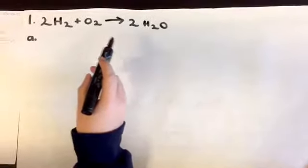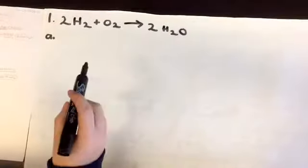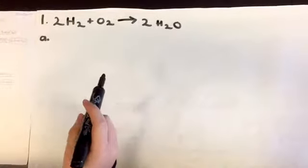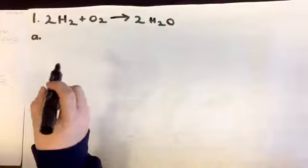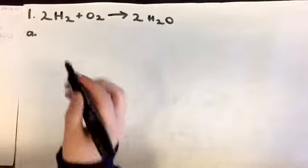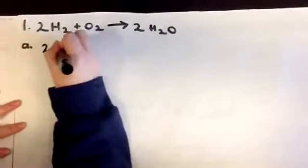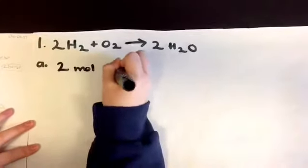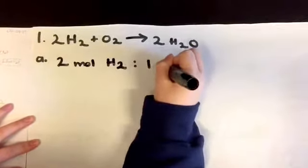Okay, so this is the chemical equation 2H2 plus O2 yields 2H2O. Since the molar ratio depends on coefficients, we have two moles of H2 and one mole of O2. So the molar ratio would be 2 moles of H2 to 1 mole of O2.